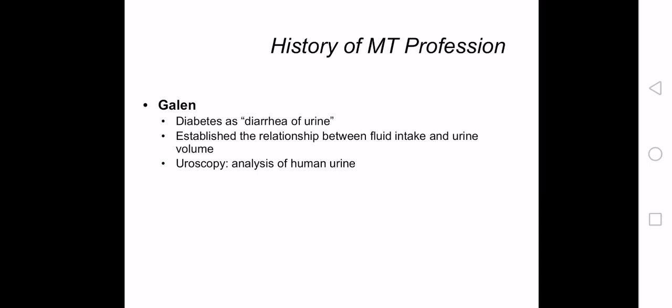About six centuries later, Galen began his scientific findings by refining Hippocrates's ideas, theorizing that urine is not a filtrate of the four humors and overall condition, but rather it is the filtrate of the blood. Galen sought to make urine diagnosis more specific, using the phrase 'diarrhea of urine' to describe excessive urination — what we now call polyuria — which is a common symptom of diabetes, and he established the relationship between fluid intake and urine volume.